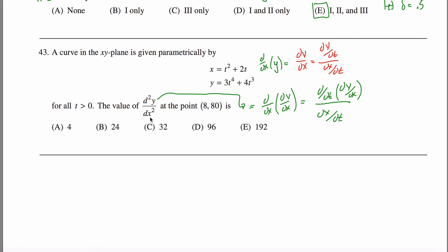So dy over dx, let's take care of that first. dy over dx is dy over dt over dx over dt. So dy over dt is just the derivative of this guy right here, 3t to the fourth plus 4t cubed. Its derivative would be 12t cubed plus 12t squared. Just taking the derivative of this guy with respect to t.